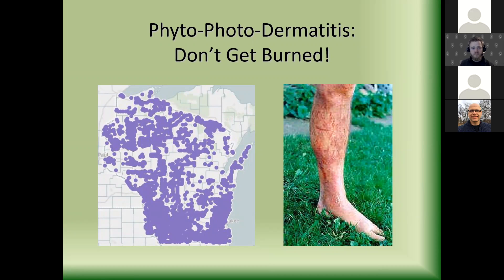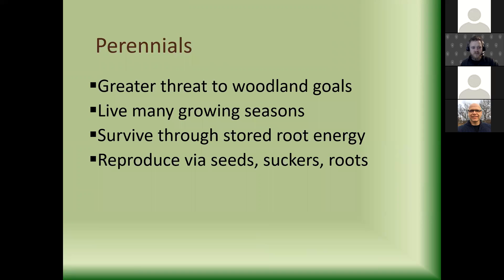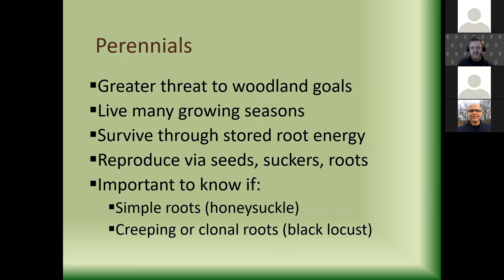The more important invasive species for woodland management are perennials. They grow many seasons, survive with energy stored in roots — which is a way managers can target them — and have more reproductive strategies than annuals or biennials, including seeds, suckers, and roots. Understanding what type of root system a perennial has is important: simple roots like honeysuckle can potentially be pulled out whole, whereas creeping or clonal roots like black locust will break and generate more young plants wherever broken.